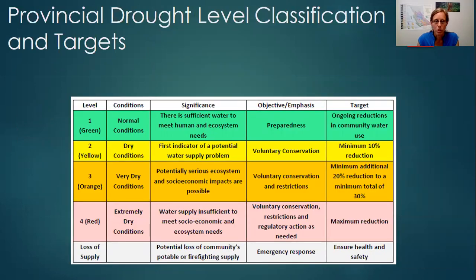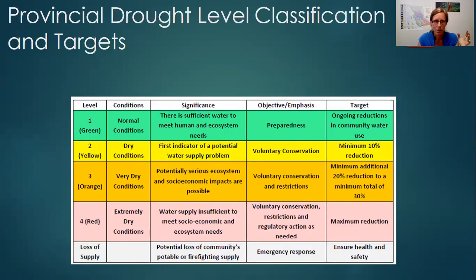The Regional District of Kootenay Boundary refers to the provincial drought level classifications to determine recommendations for conservation actions associated with water conservation and efficient water use. The provincial drought level classifications have four levels: Level 1 is normal conditions with sufficient water to meet human and ecosystem needs. Level 2 is dry conditions. Level 3 is very dry, where potential serious ecosystem and socioeconomic impacts are possible. Level 4 is extremely dry, where water supply may be insufficient to meet socioeconomic and ecosystem needs. Keep in mind this is a classification for the full watershed, so conditions in Beaverdell may differ from Christina Lake — the province focuses on the worst-case scenario for the area.